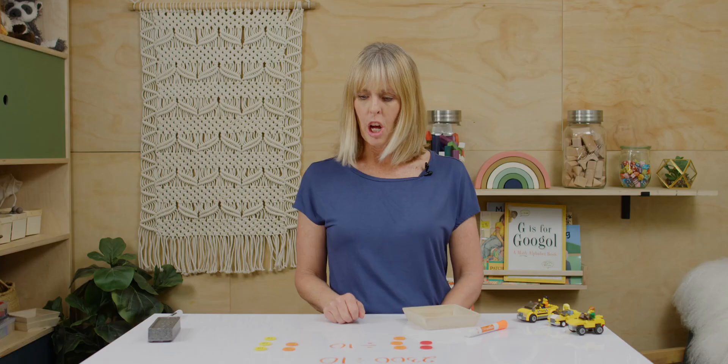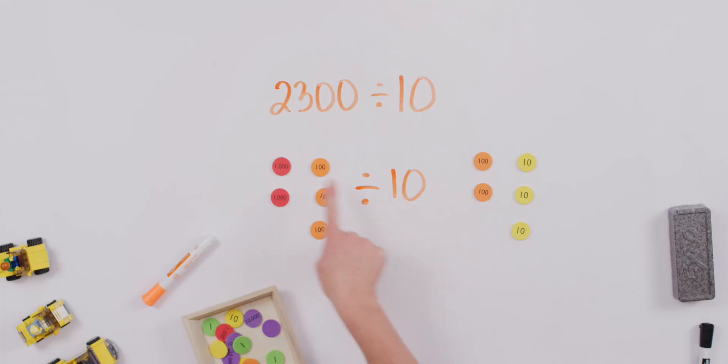To double check, we can always think, what is 100 times 10? It should give you 1,000. What is 10 times 10? Yes, it should give you 100. Just a way to double check to make sure you're doing your division correctly.